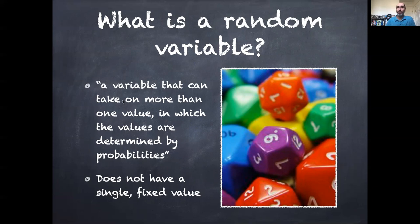By contrast, with a random variable, it's a variable that can take on more than one values in which the values are determined by probabilities. It doesn't have a single fixed value.